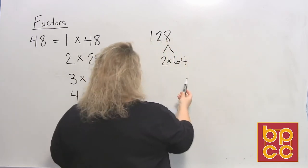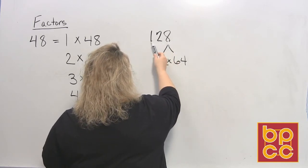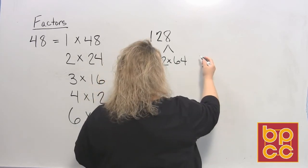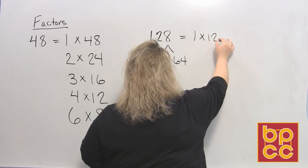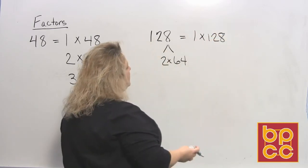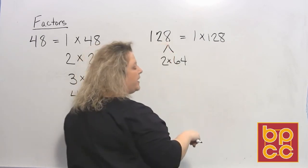Then you ask yourself, well does 3 divide in there? 8 plus 2 is 10 plus 1 is 11. So that means 3 doesn't go in there because 3 doesn't divide into 11. You also have 1 times 128. That's an automatic given. 3 doesn't go into it. 4. Does 4 divide into 28? Yes, it does.